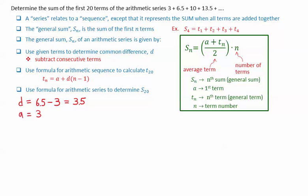The first term is equal to 3, n is equal to 20, because we want the sum of the first 20 terms.